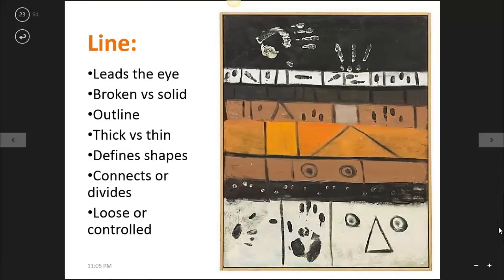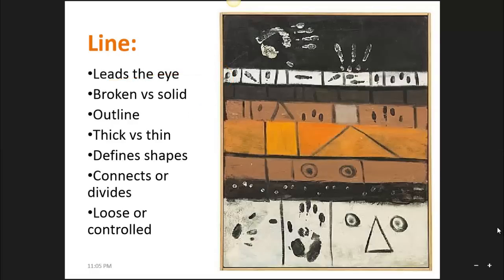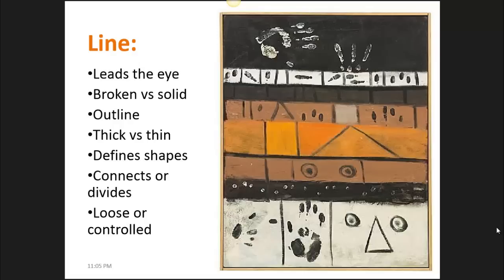Starting with line, what does line do when you look at this work? You can start asking yourself questions such as, does this line lead your eye anywhere across the image? For example, does your eye follow the line horizontally, perhaps following the white line near the top from left to right and back again? Or perhaps the lines of the triangle near the center lead your eye up diagonally through the image? You can also ask yourself, are the lines broken or solid? Are the outlines thick or thin? Do they define shapes such as the squares, rectangles, circles and triangles that we see? Do they connect or do they divide things? In many ways, the lines in this work seem to divide the bands of color. And are the lines loose or controlled?